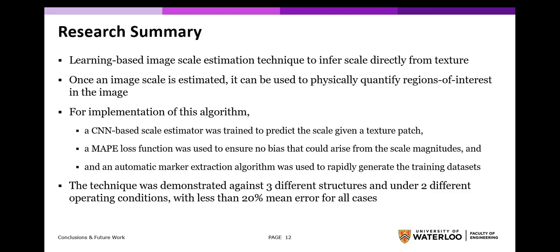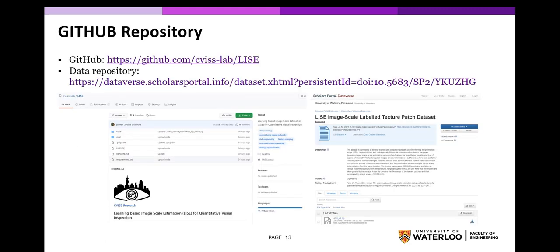Overall, this research proposes a learning-based image scale estimation technique to infer a scale directly from texture. Once an image scale is estimated, it can be used to physically quantify regions of interest in the image. A CNN-based scale estimator was trained to predict the scale for a given patch. A MAPE loss function was used to ensure no bias was introduced due to the magnitude of scales, and an automatic marker detection algorithm was used. The technique was demonstrated against three different structures and under two different operating conditions, achieving less than 20% mean error for all cases. The work can be accessed via a GitHub repository and a data repository with instructions on how to train the image scale estimator. Thank you for listening to this presentation.